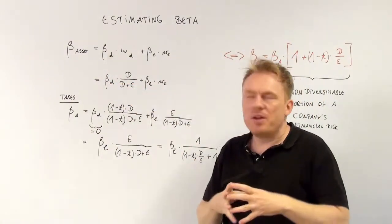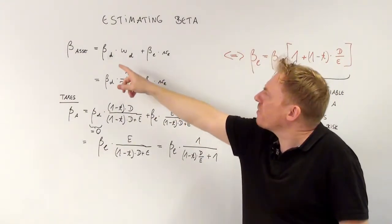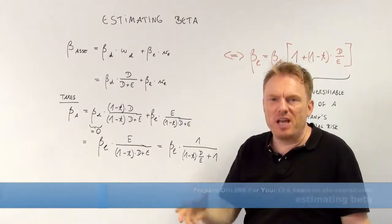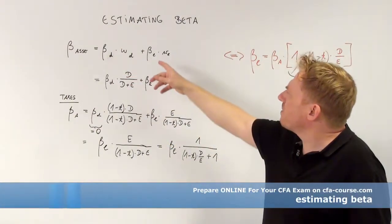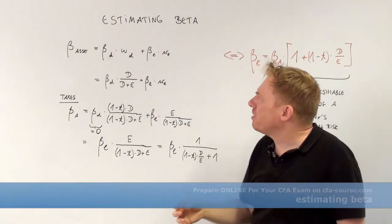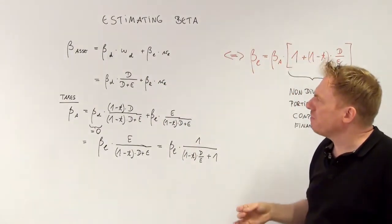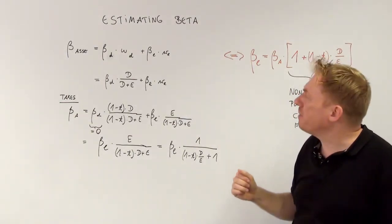So there's the beta. The asset beta is the beta of debt times the proportion of debt plus beta of equity. The equity beta is multiplied by the proportion of equity. This formula is self-evident when put this way.